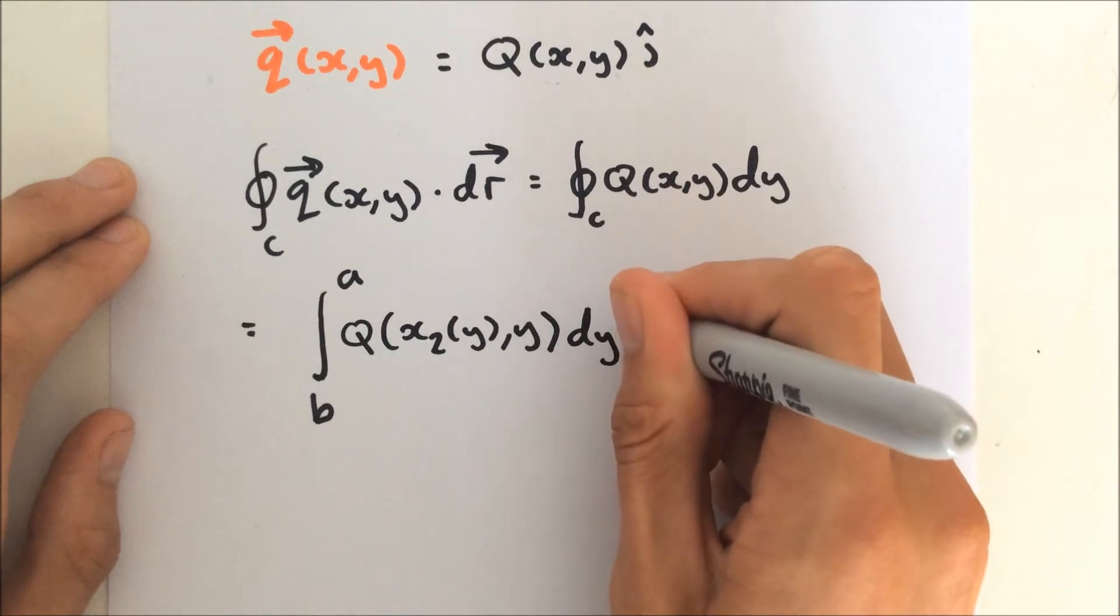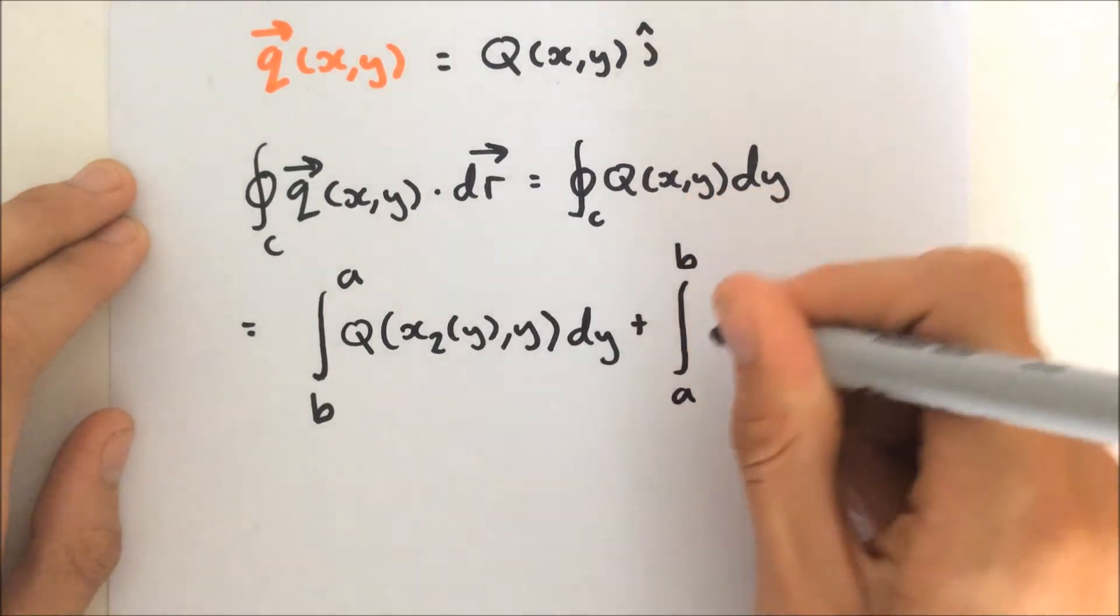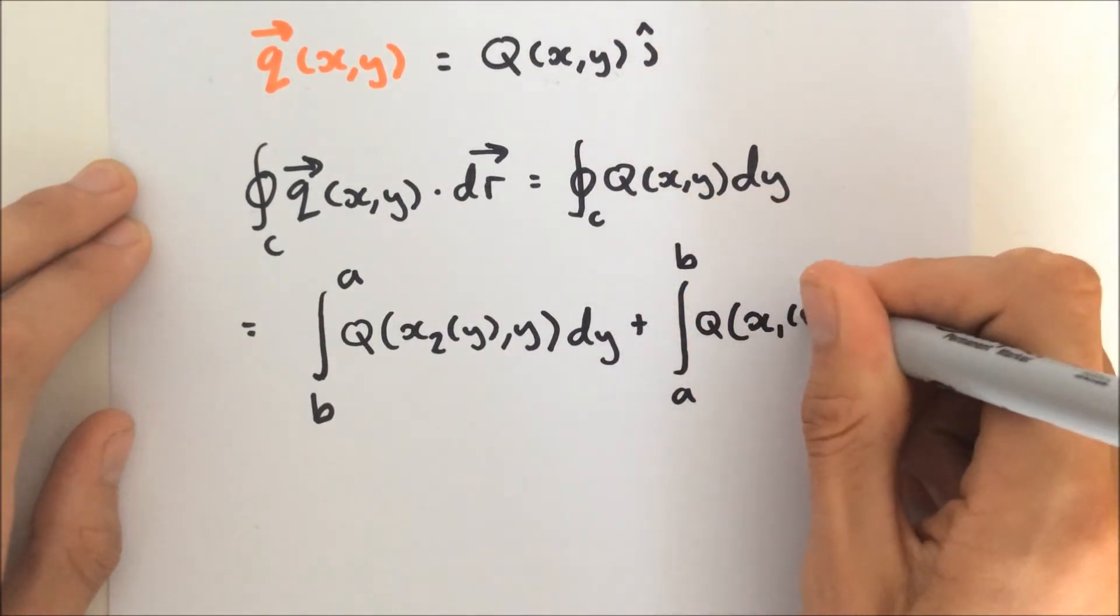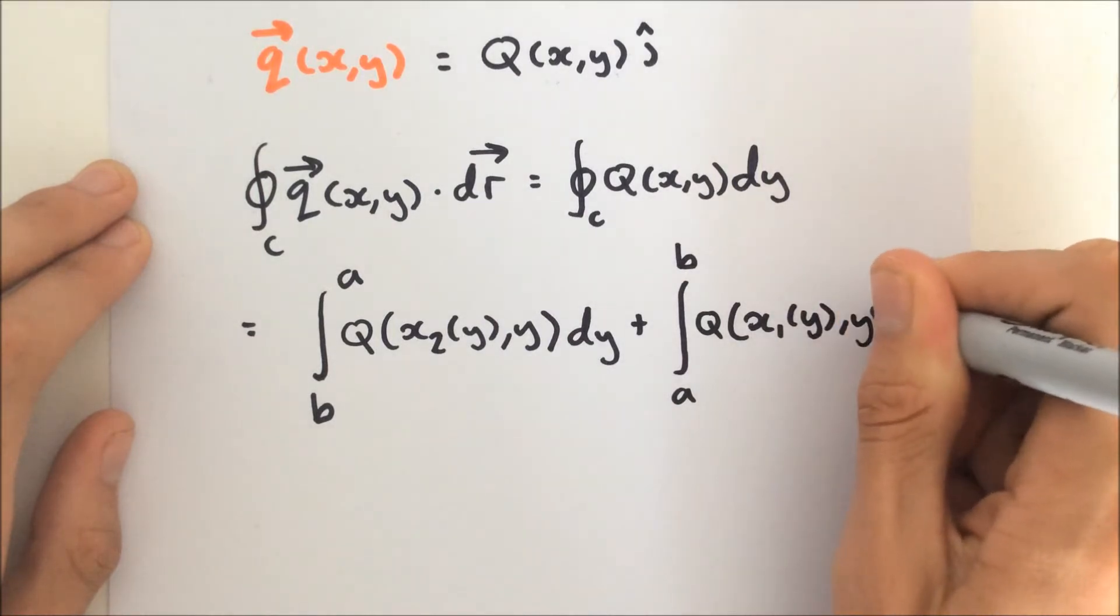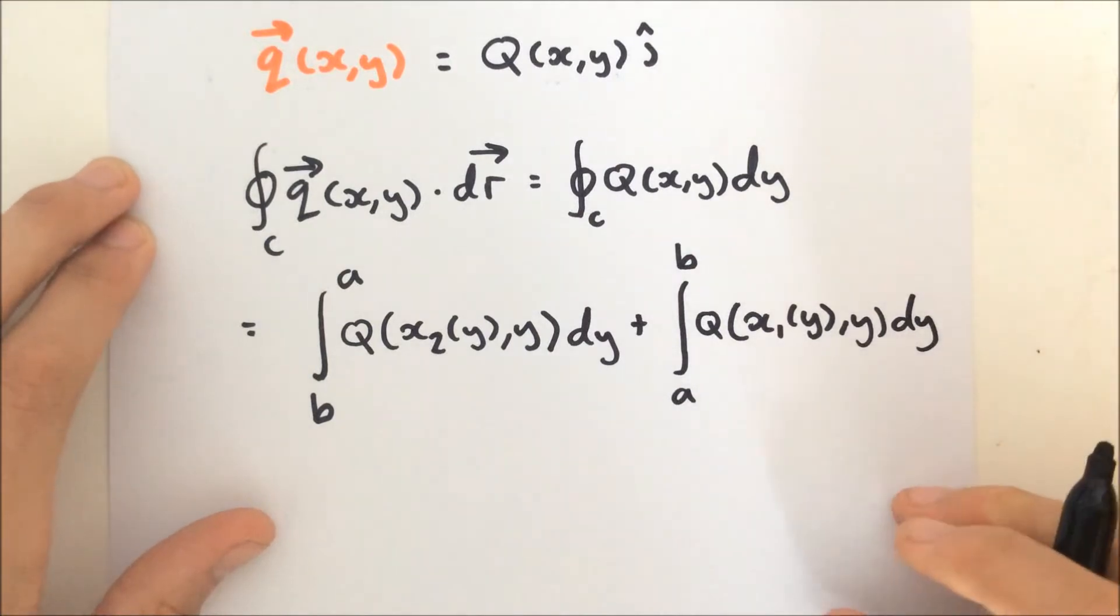Plus the integral from A to B of Q of x1, and then y, and then dy, all right?